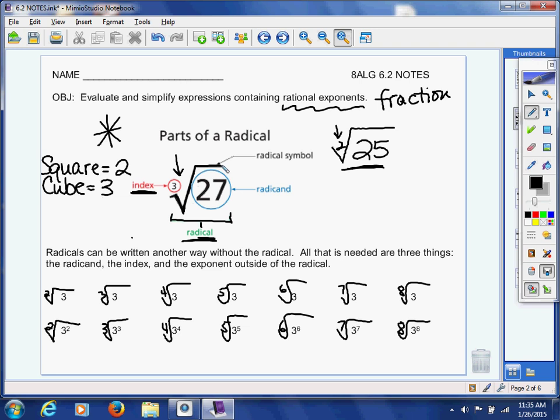Now, this big checkmark sign right here, that is the radical symbol. That's the checkmark sign that indicates, please take the root of this. Could be a square root, a cube root, 4th root, whatever. And the number underneath the radical symbol is called the radicand. So, that's the parts of a radical.